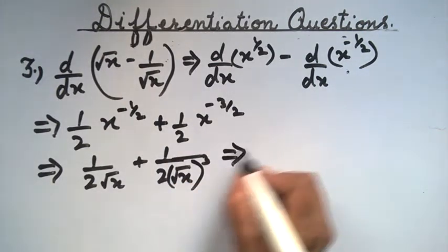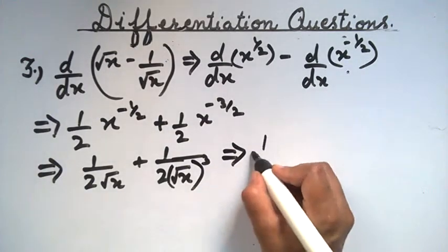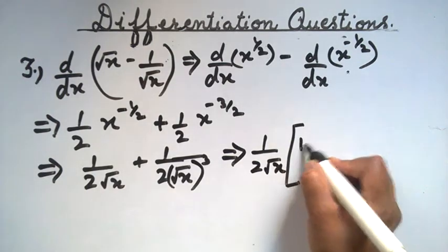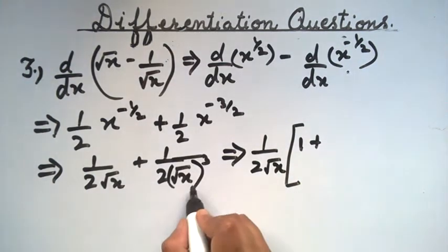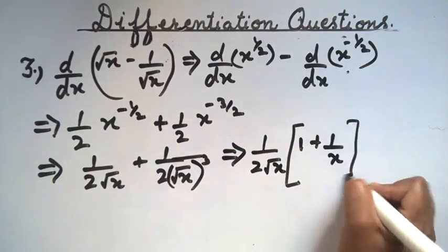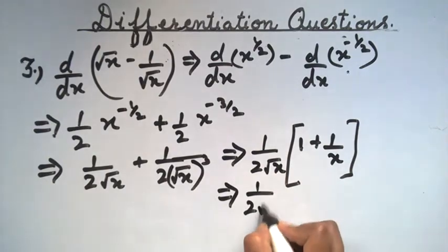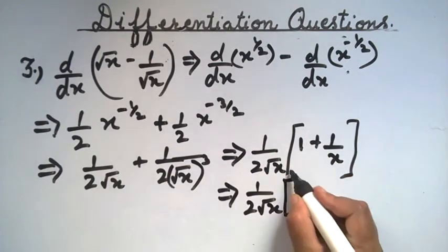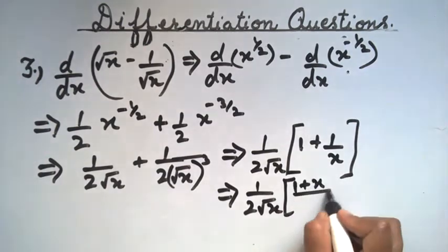On further simplifying, we get 1/(2√x) plus 1/(2x√x), or taking 1/(2√x) as common: (1/(2√x)) times (1 + 1/x), which gives (1/(2√x)) times (x + 1)/x.